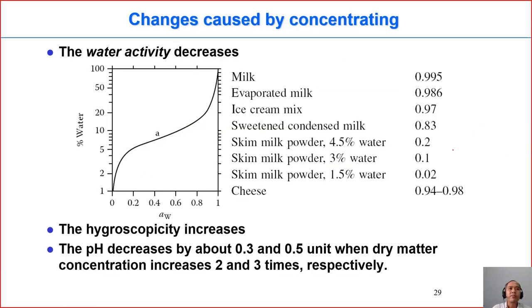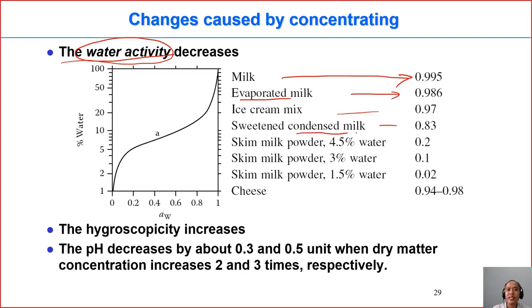What are the effects of concentration? When we do concentration, we reduce water activity. For example, milk has a water activity of almost 1. Evaporated milk reduces it a little bit. Condensed milk with added sugar — sweetened condensed milk — has already removed part of the water and added sugar, so the water activity is quite low. Skim milk powder is actually not concentration anymore; drying is applied, leaving only a small amount of water, so water activity is even much lower.